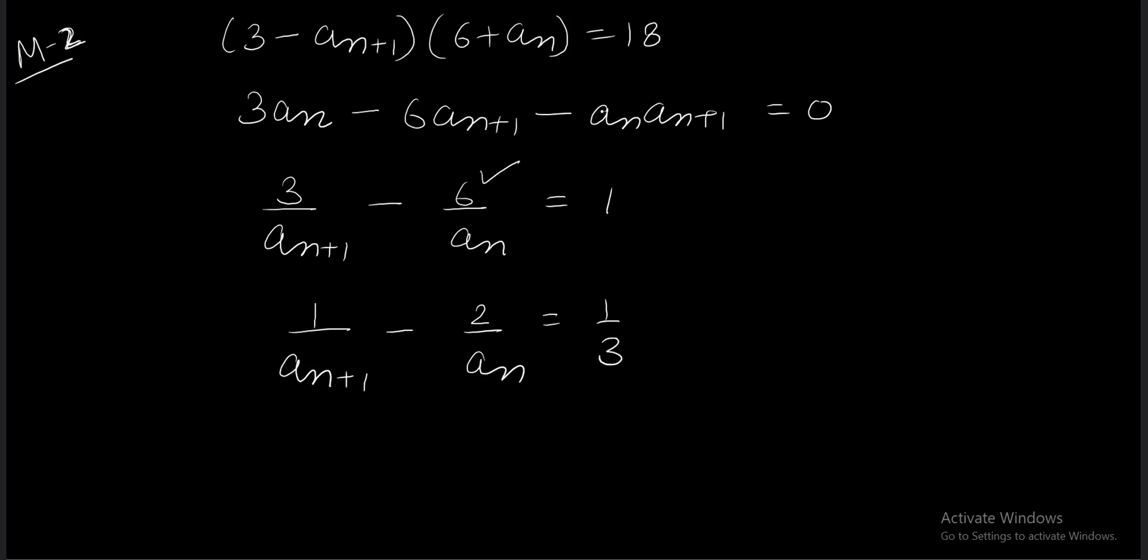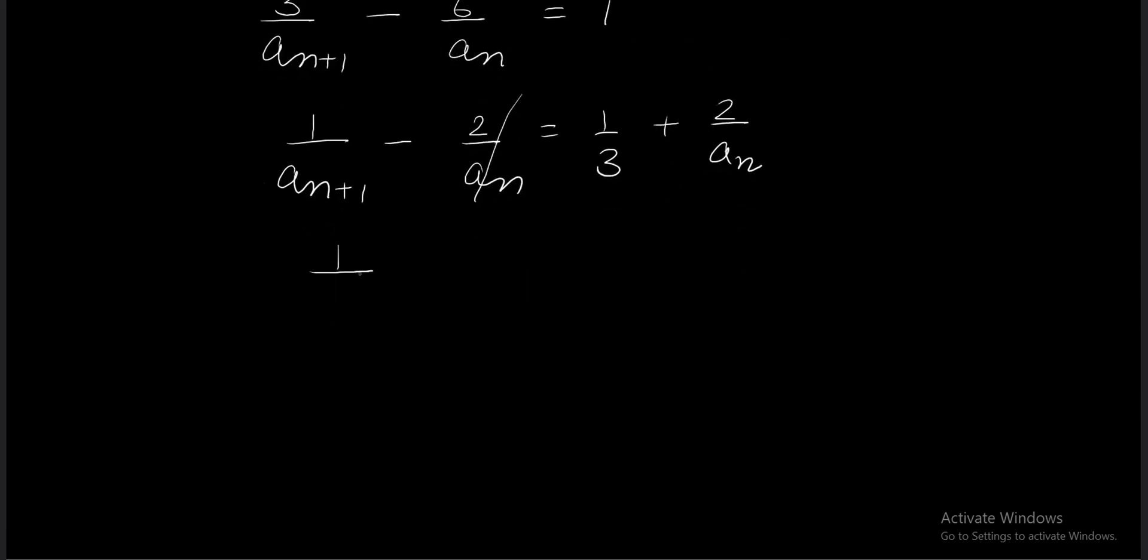Now I shift 2/a_n to the right side. To get similar expressions on both sides, add 1/3 to both sides. The right hand side becomes 1/3 + 2/a_n. Taking 2 common, I get 2(1/a_n + 1/3). If this is the nth term of some series, then the other side is the (n+1)th term. See the ratio of these two terms is constant: 2.